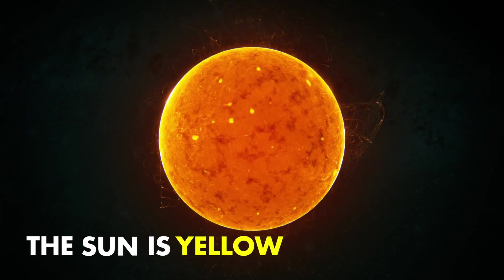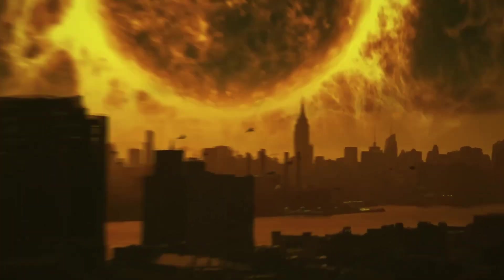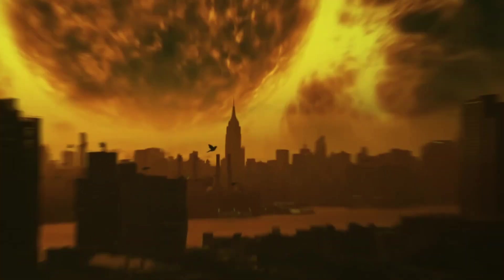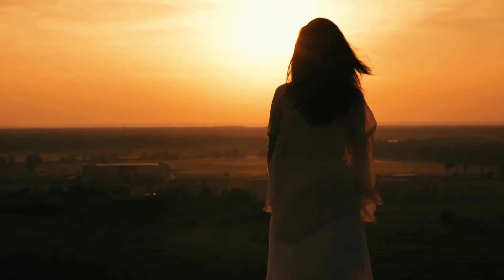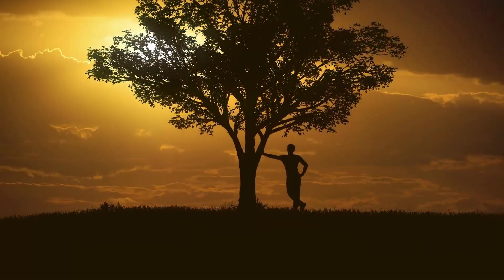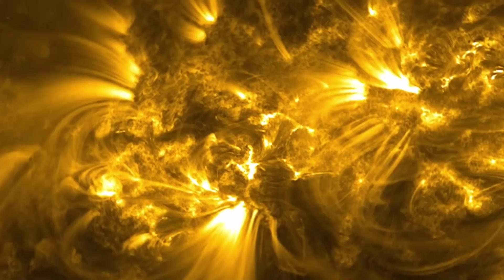Number 1. The Sun is Yellow. The myth that the sun is yellow has been perpetuated by our perception of its color from Earth. When we look up at the sky during the day, the sun often appears yellow due to the scattering of its light by our atmosphere. However, the truth is that the sun is white.